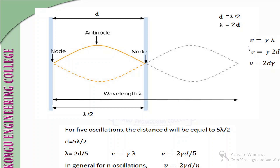Using the general equation relating velocity, frequency, and wavelength—V = νλ—and substituting λ = 2D, we get V = ν × 2D = 2νD. This velocity is the velocity of the ultrasonic waves.